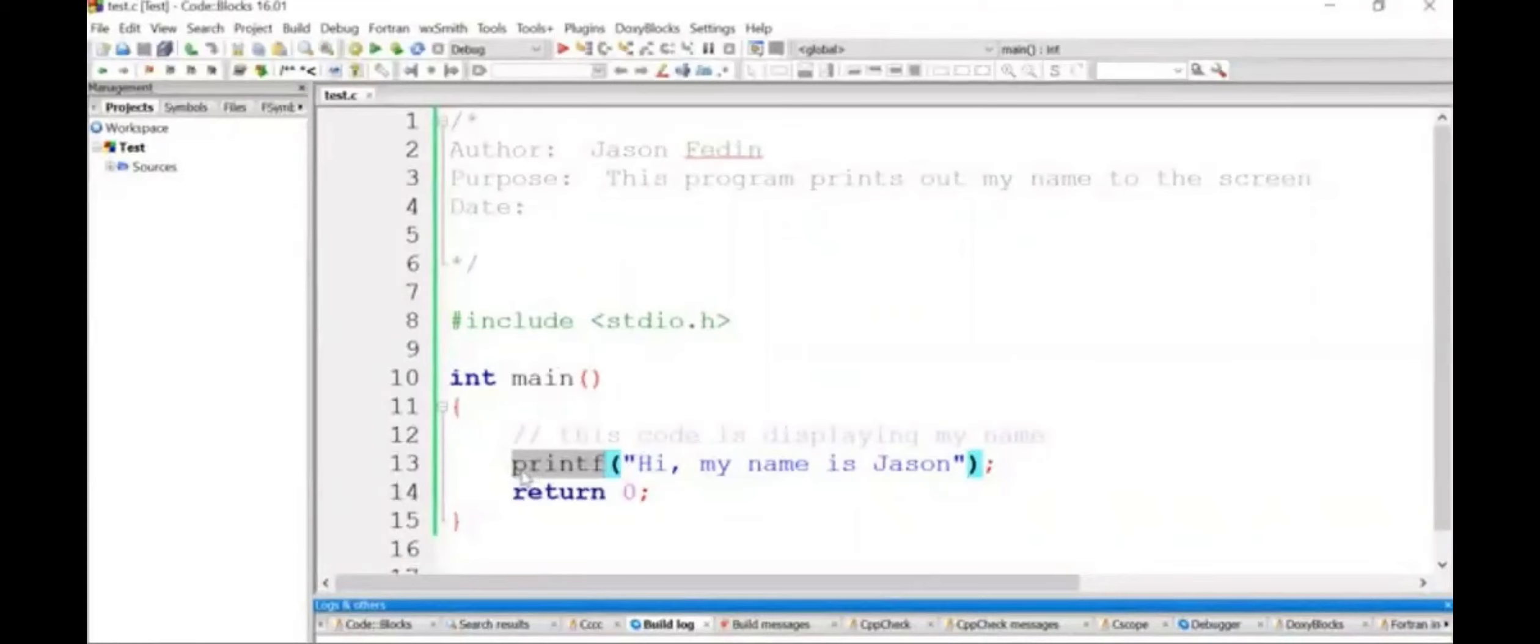This is the code that's actually displaying the output, and again this is a basic concept of C that needs to be addressed very early on because you often need to display output to the screen. So let's talk about displaying output to the screen using this printf function.